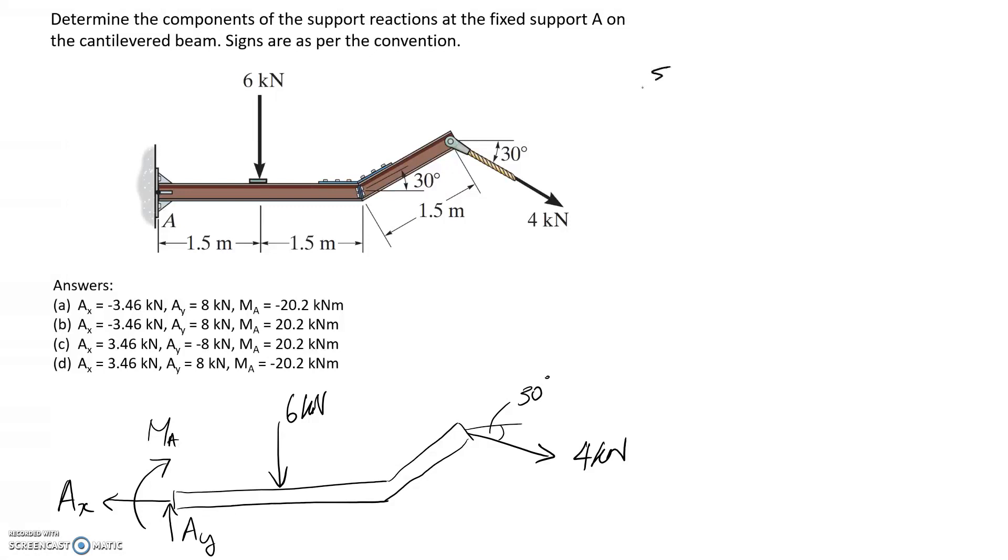Let's start with summing forces in the x direction. In the x direction we have this one, which we'll call negative Ax, and then we have part of this one, which is positive. So plus, it's going to be the cos component, equals 0. So if you type that in a calculator, you get that it's equal to 3.46 kilonewtons. And it comes out positive, which means the direction was correct. So this is definitely 3.46 kilonewtons to the left.